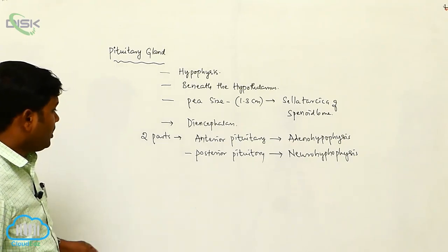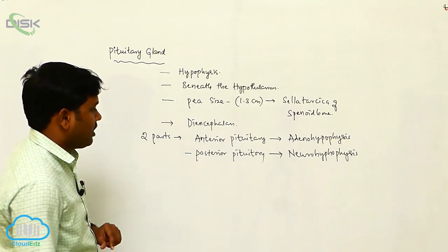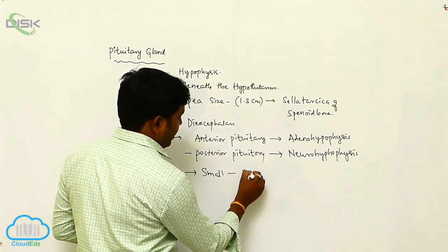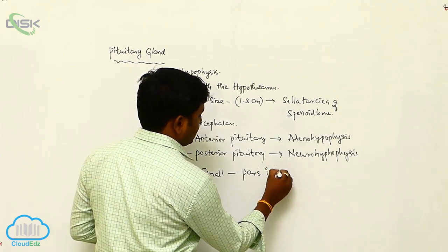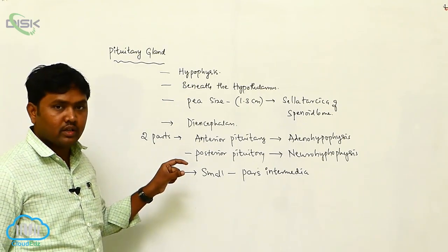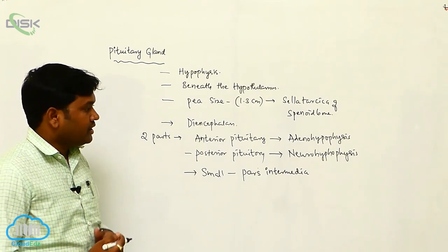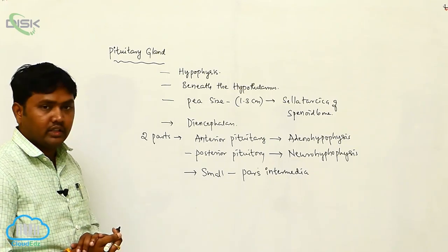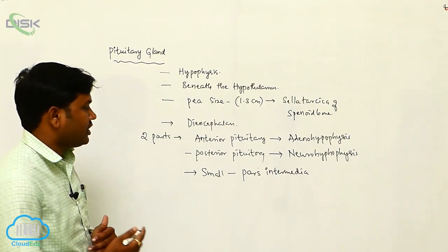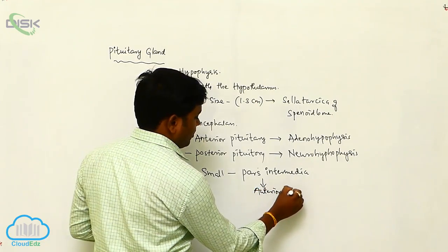Between these two pituitary regions there is a small region called the pars intermedia. In human beings, the pars intermedia is completely attached and mixed into the anterior lobe.